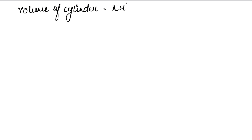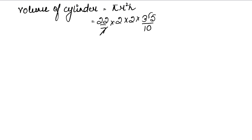अब volume of cylinder निकालते हैं। Cylinder का formula होता है π r² h। π की value 22/7, radius है 2, और height है 3.5। Calculating: (22/7) × 4 × 3.5 = (22/7) × 14 = 44 meter cube।